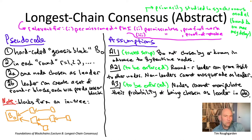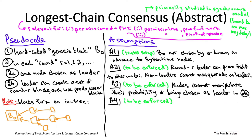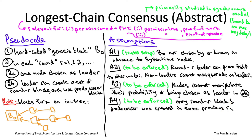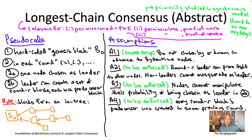The eagle-eyed may notice that what I've said doesn't rule out weird directed cycles. Assumption four rules that out: every block created in round R must as its predecessor refer to some block created in a previous round — R minus one or less. This ensures the data structure is truly a single in-tree with strictly decreasing round numbers as you trace backward to the genesis block.